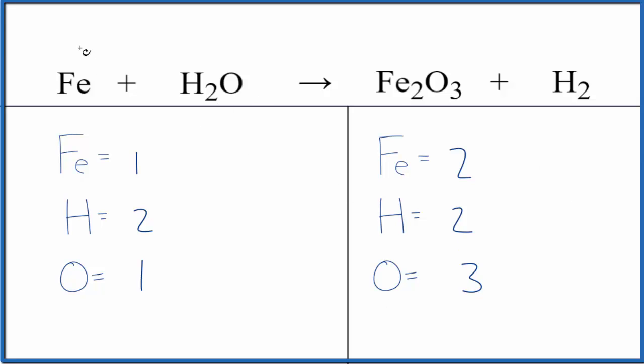For this particular equation, we have iron by itself. That means if we change the coefficient, it won't change the numbers of hydrogens or oxygens. So we want to leave this to last. And here we only have hydrogen atoms. Again, if we change the coefficient, that won't change the number of irons or oxygens.